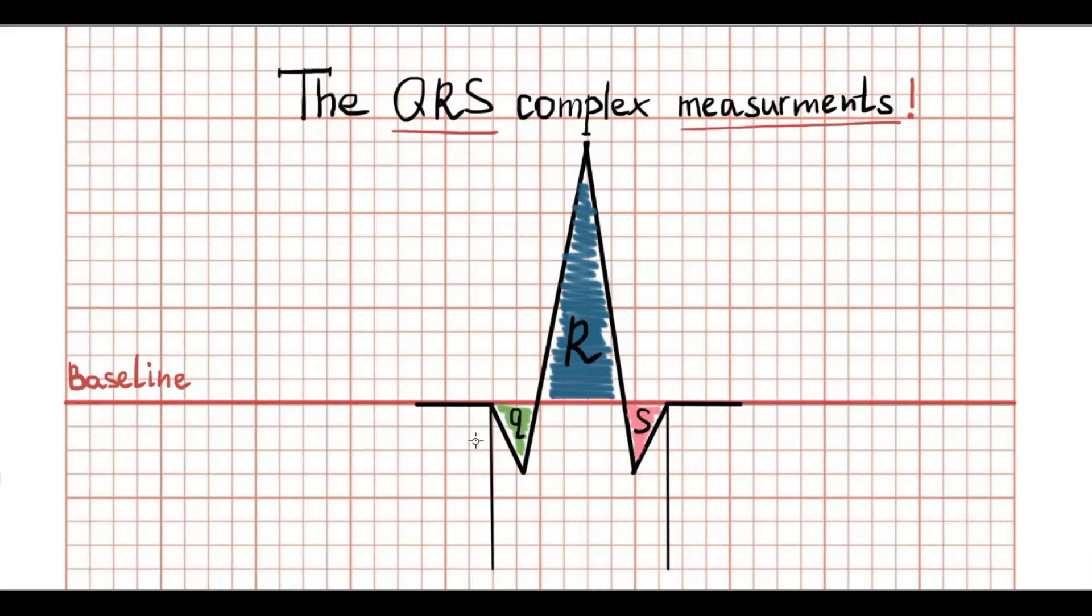Total duration of QRS complex is necessary for understanding of ventricular conductivity. Normally, it should be less than 0.1 second.